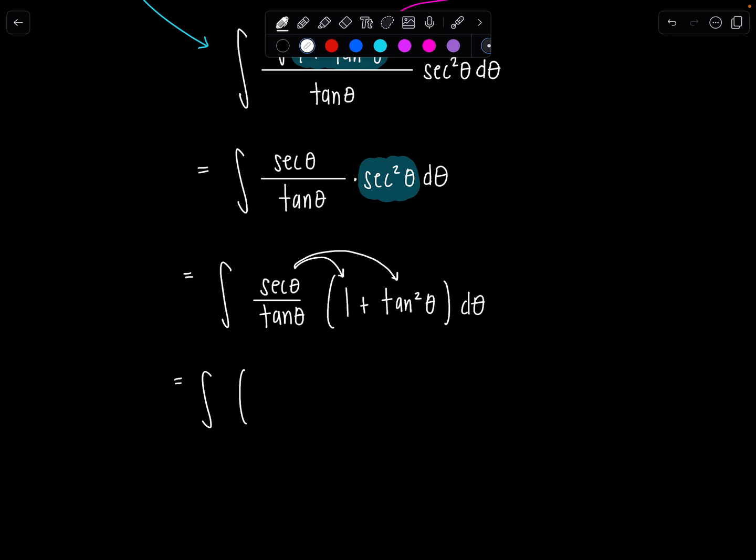So we have now secant theta over tan theta plus, and then, this is cool because look, one of these tangents cancels with the tan squared, right? So then the second term is secant theta tan theta. Now, hopefully you're excited, right? Because you learned all your derivatives in Calc 1, and you know the derivative of secant theta is secant theta tan theta. So, boom, I know the antiderivative of this already.